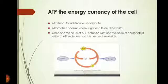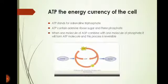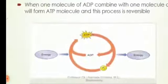Next, I will talk about ATP — what is ATP? ATP is the energy currency of the cell. ATP stands for adenine triphosphate. Adenine triphosphate contains adenine, ribose sugar, and three phosphate groups. When one molecule of ATP combines with one molecule of phosphate, it will form an ATP molecule, and this process is reversible, as you can see in the diagram.